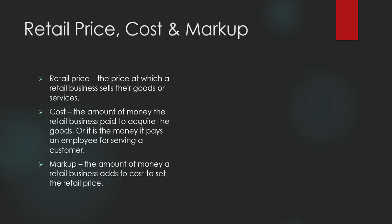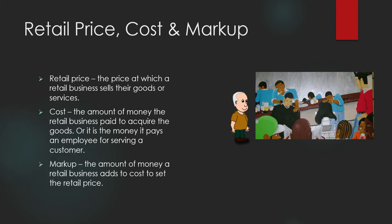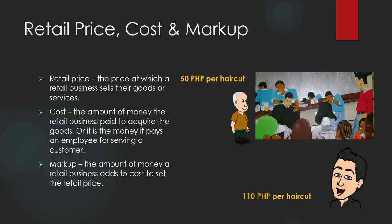Another example is a barbershop, which sells services. The owner of a barbershop will hire a barber, and they will come to an understanding: the shop will pay the barber 50 pesos per haircut given to a customer, and the barbershop will charge a customer 110 pesos per haircut. The markup is 60 pesos. So the cost per haircut for the business owner is 50 pesos, the markup is 60 pesos, and the retail price per haircut is 110 pesos.